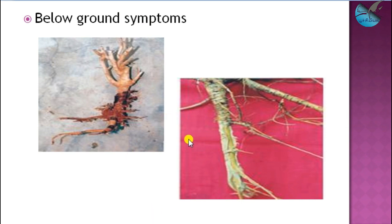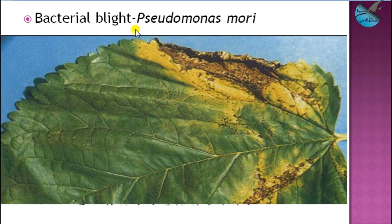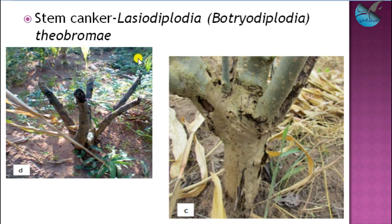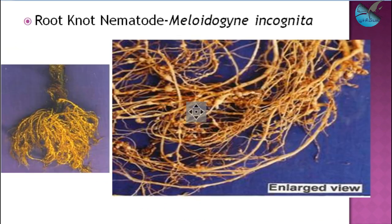The next important disease is bacterial blight, which causes blighted symptoms. Leaves start to show yellowing, and in later stages they dry off. When damage is more, we go with bactericides like streptomycin. This is the blighted appearance due to bacterial blight. Another disease is stem canker, Lasiodiplodia theobromae — in the stem areas, localized drying can be seen.